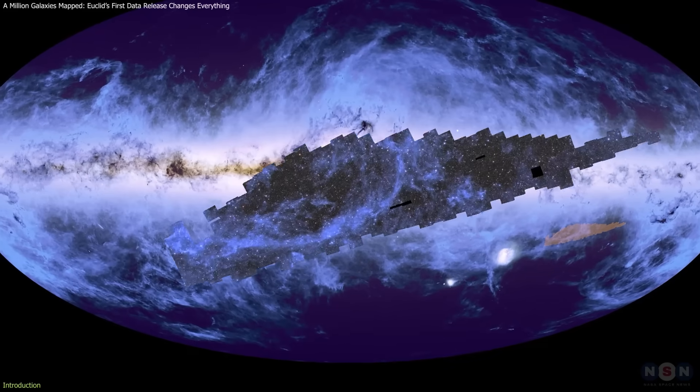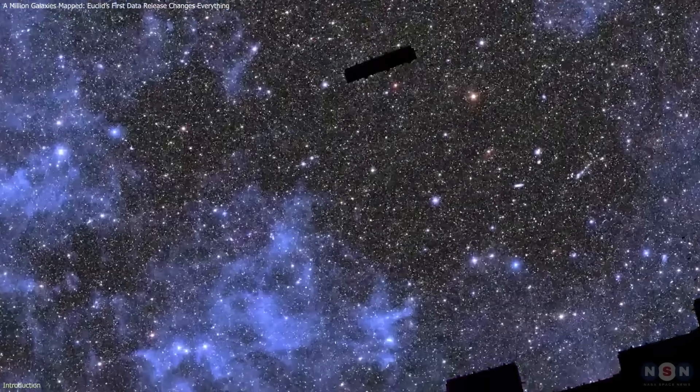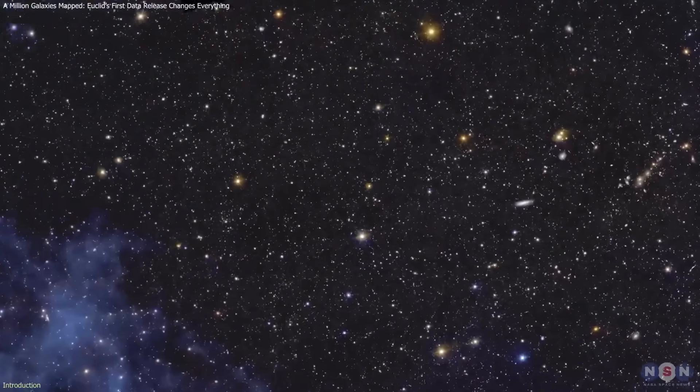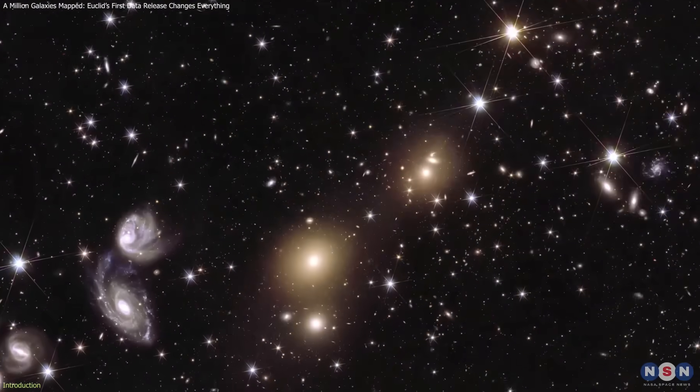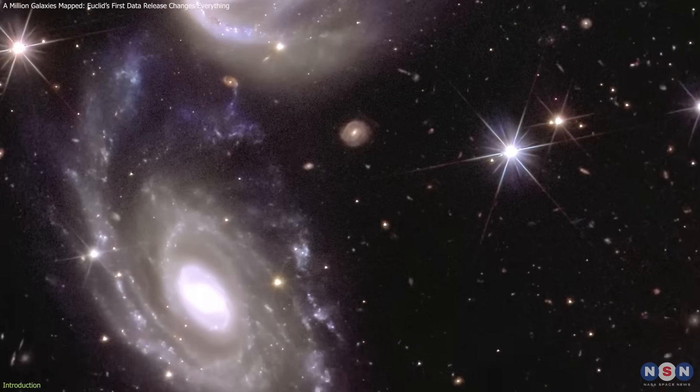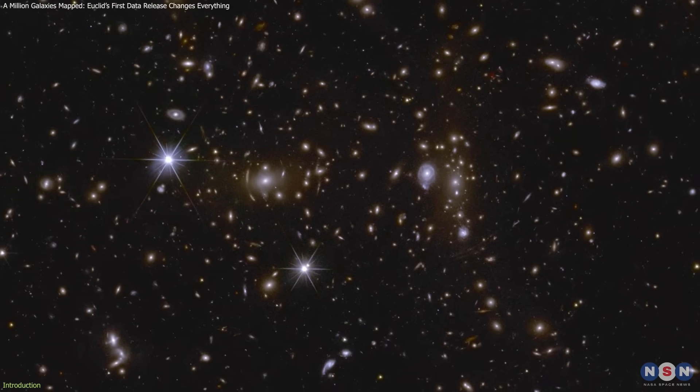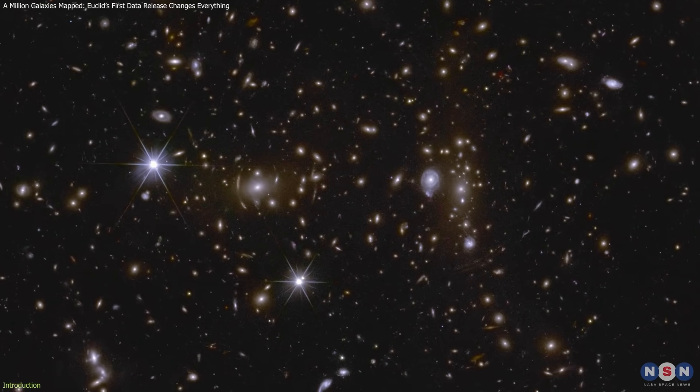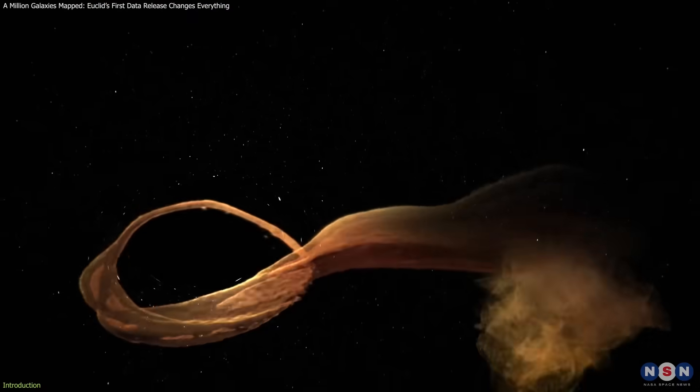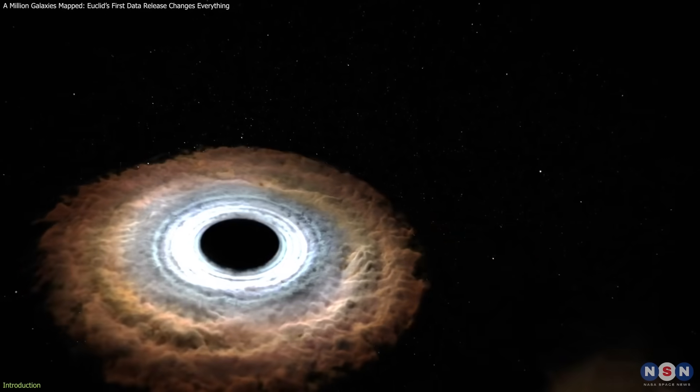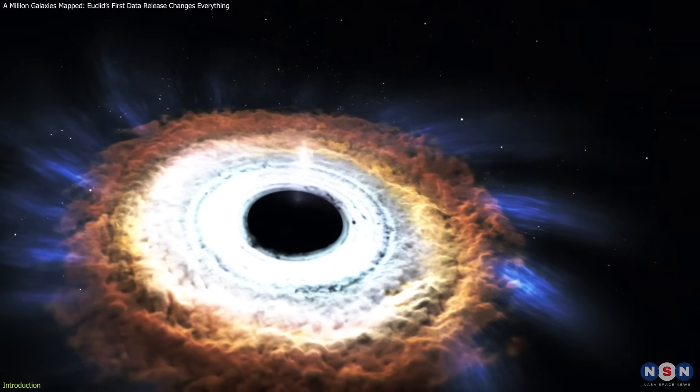Euclid's first major data release has given astronomers the kind of dataset they've been waiting for – a wide, detailed look at galaxies across billions of years of cosmic history. The new observations reveal structures that weren't visible in previous surveys, highlight rare and energetic systems, and expose early clues about how massive black holes form and grow.